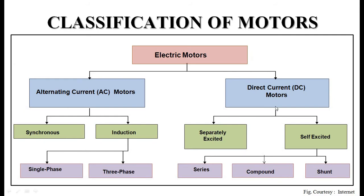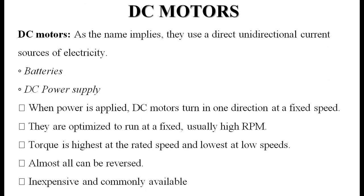DC motors can be classified into two categories: separately excited DC motors and self-excited DC motors. Self-excited DC motors have three types: series, shunt, and compound. These are the broad classifications, and we will go through the different types in the upcoming slides.